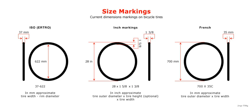The nominal width of a rim is the inner width between the straight sides or beads, as one can easily measure it with a caliper. See the standard for drawings and exact measurement procedures.